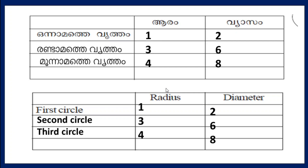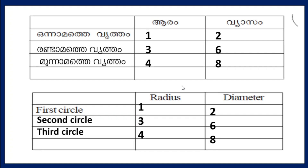The 3rd circle has radius 4 — it is 8. If you see this center point, count 1, 2, 3, 4 for the radius, then 1, 2, 3, 4, 5, 6, 7, 8 for the diameter. Third circle: radius 4, diameter 8.